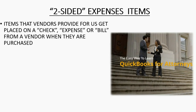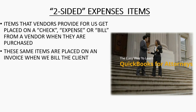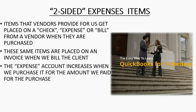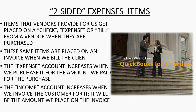Two-sided expense items are items that vendors provide for us and they get placed on a check, expense, or a bill from a vendor when they are purchased. These same items are placed on an invoice when we bill the client. The expense account increases when we purchase it for the amount we paid, and the income account increases when we invoice the customer for it.